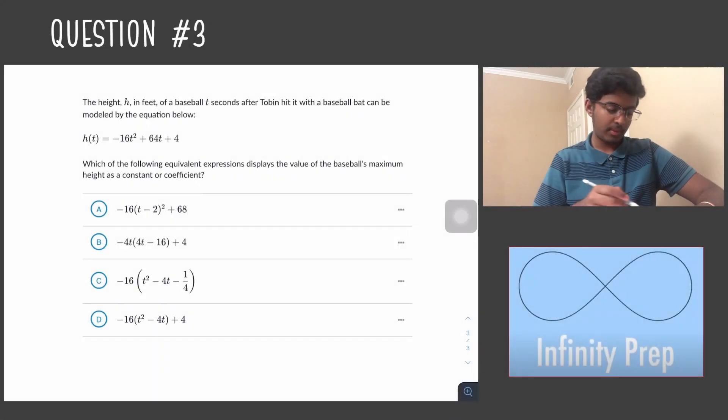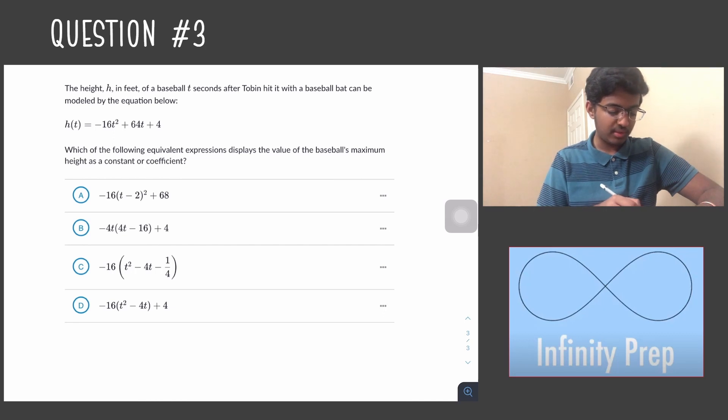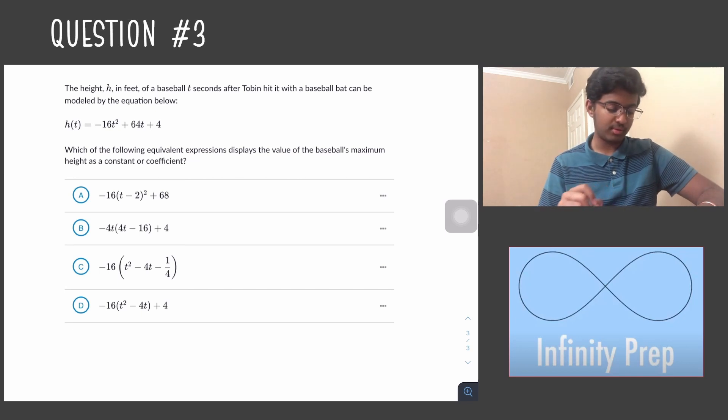Question number three: The height h in feet of a baseball t seconds after Tobin hit it with a baseball bat can be modeled by the equation below: h(t) = -16t² + 64t + 4. Which of the following equivalent expressions displays the value of the baseball's maximum height as a constant or coefficient? Unlike the previous two questions, we can't solve this equation by factoring.